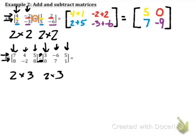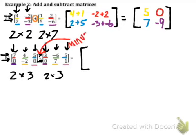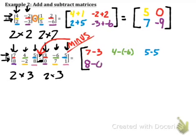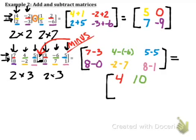Let's match up our corresponding elements: red to red, green to green, blue to blue, purple to purple, gold to gold, and pink to pink. Be careful — when we subtract, you have to distribute the negative to the second element; be very careful with that minus sign. So: seven minus three, four minus negative six, five minus five, eight minus zero, negative two minus seven, and eight minus one. Simplifying: four, ten, zero, eight, negative nine, and seven.